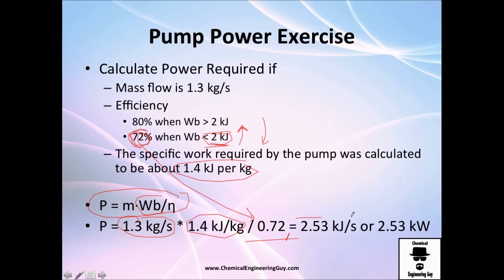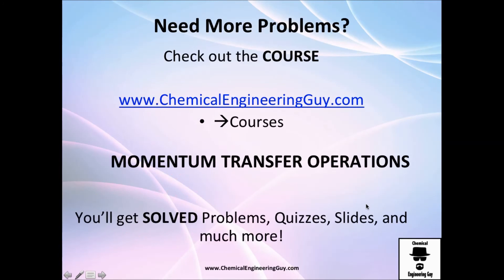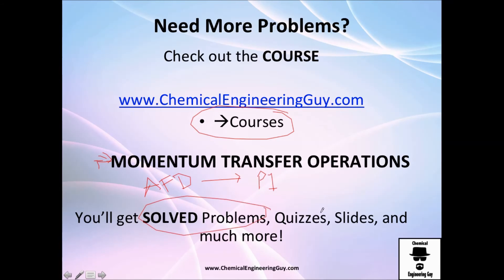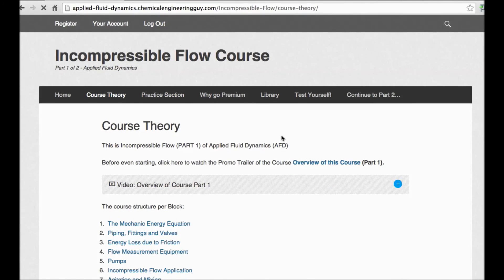The result is 2.53 kJ/s, or kilowatts — that's the power requirement. As power increases, efficiency often increases too; at lower power you may operate in a different efficiency range. This was a simple problem, but for more solved problems and theoretical quizzes you can check out the applied fluid dynamics course.